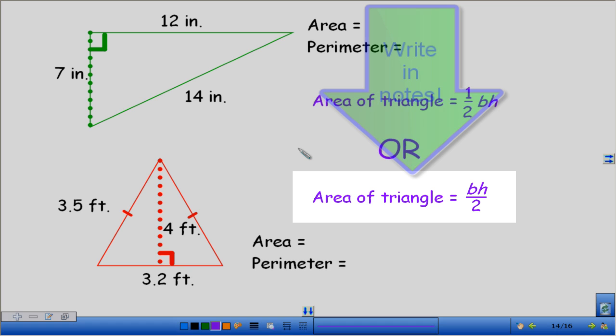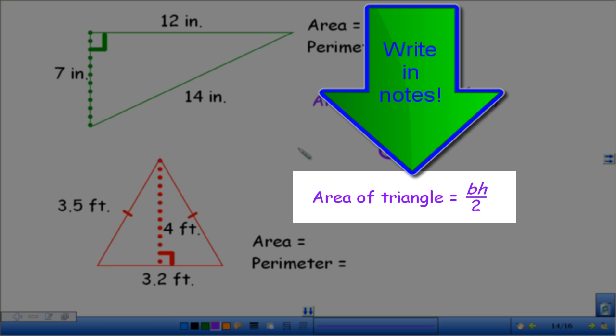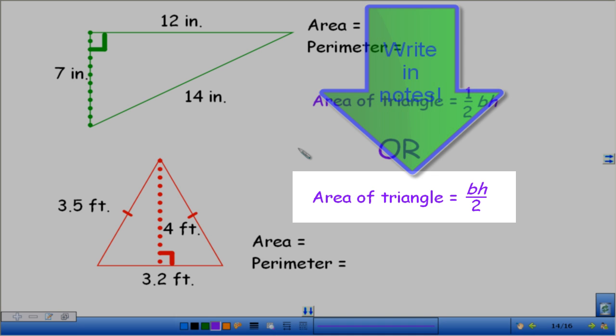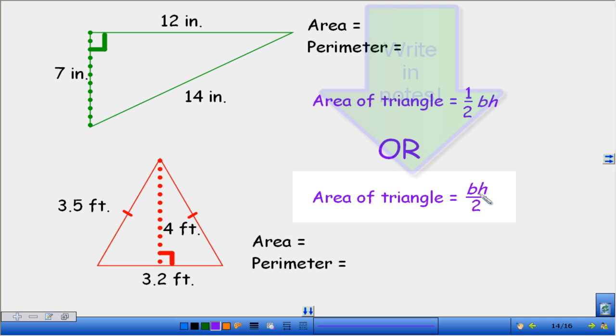Alright, so the area of a triangle, there are two different ways that you can find the area. The first one is half of your base times your height.